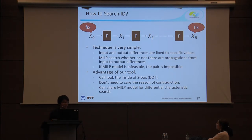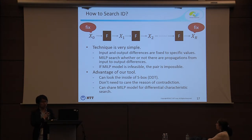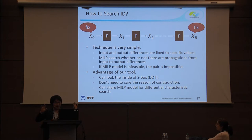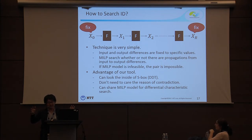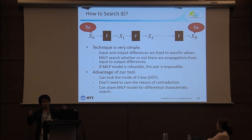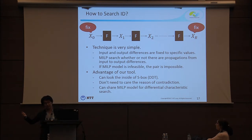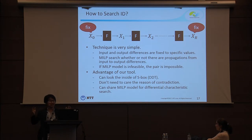Now, to find an impossible differential using this model, the technique is very simple. We have an MILP model for our r-round cipher. To search for an impossible differential, we fix the active positions of x0 and x_r. If the MILP model can find a solution, this means there exists a differential trail from x0 to x_r. On the other hand, if the MILP solver returns that the model is infeasible, this means there is no differential trail from x0 to x_r — so the pair (x0, x_r) is an impossible differential.